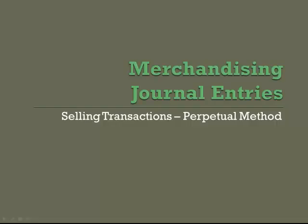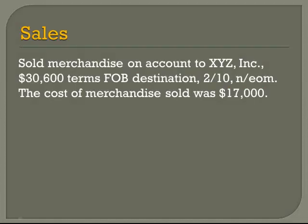Journal entries for merchandising companies are different than journal entries for service businesses. Today we're going to look at selling transactions under the perpetual method, which is different than the periodic method. So let's say that a company sells some merchandise under the terms FOB destination, 2/10, net, EOM.